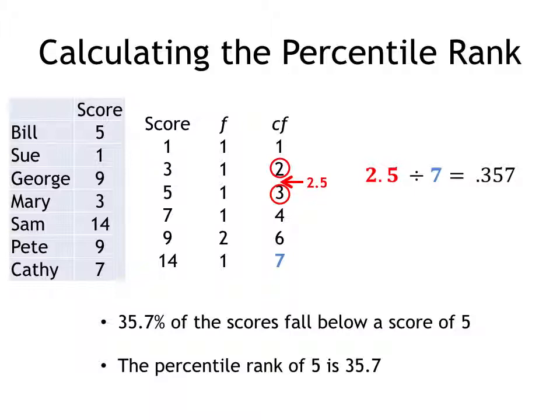I simply divide that 2.5 by the total number of scores that I have, which is seven, and I find out that 35.7% of the scores fall below a score of five. That means the percentile rank for a score of five is 35.7.